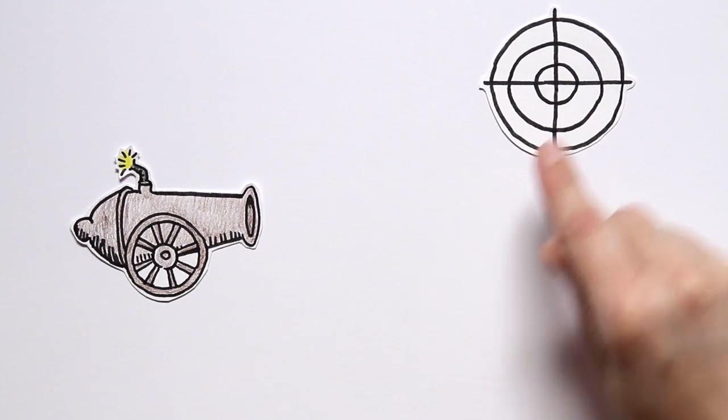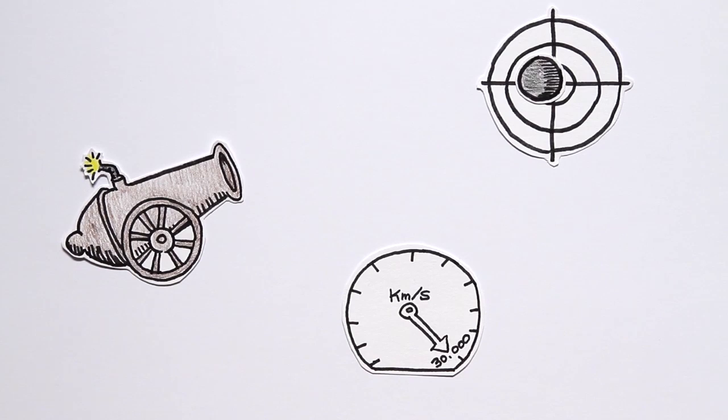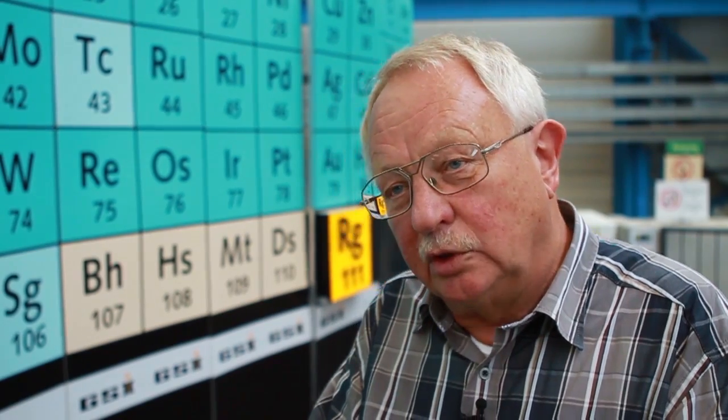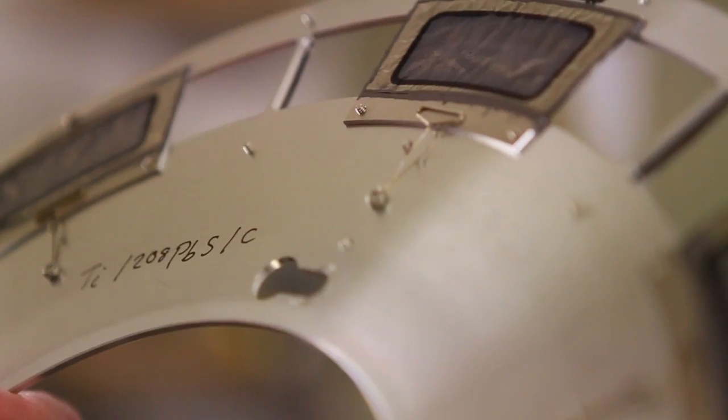In order to bring about a new element, a lighter element is fired at another by means of an accelerator at a speed of 30,000 kilometers per second. This is sufficient to bring this projectile nucleus in close connection to the target nucleus so that these two nuclei can melt and form the new element.